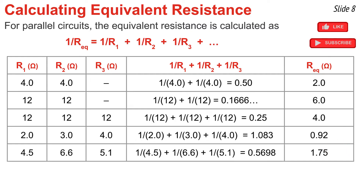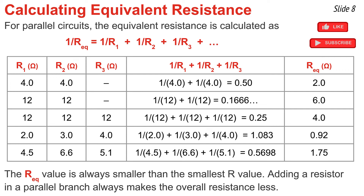Try the next practice problem yourself — you should get 1.75 as the right-side value before taking the reciprocal. When we inspect the equivalent resistance column and compare it to the individual resistor values, we notice that in all cases the equivalent resistance is always less than the smallest individual resistance value. That makes sense: adding another resistor in a branch must decrease total resistance.